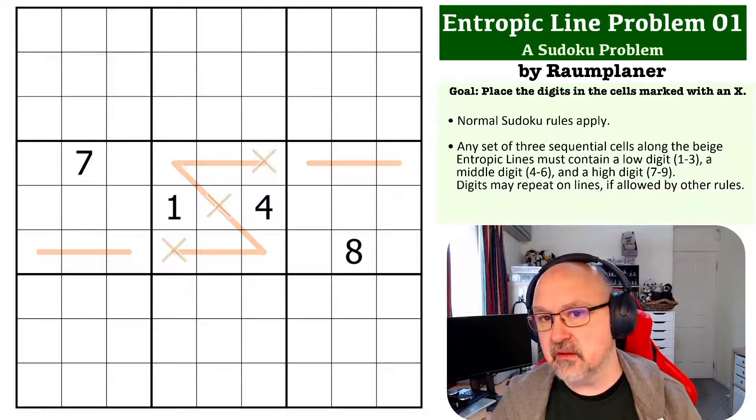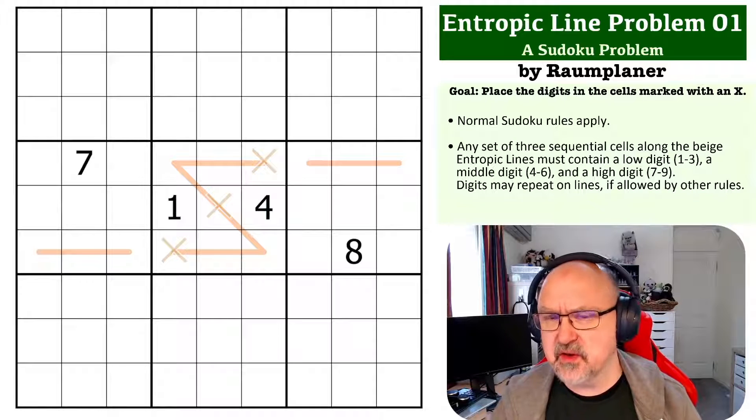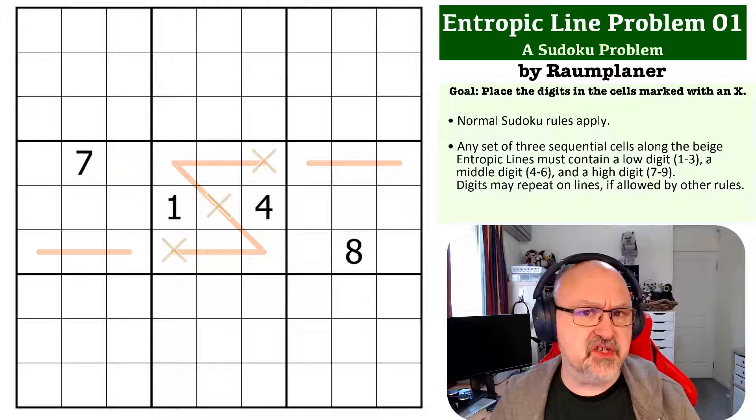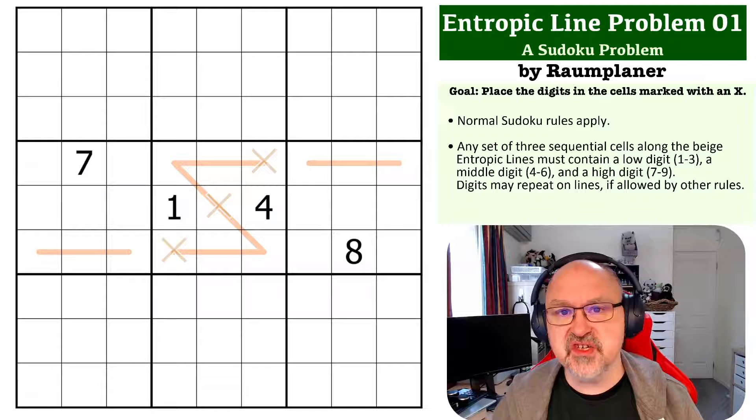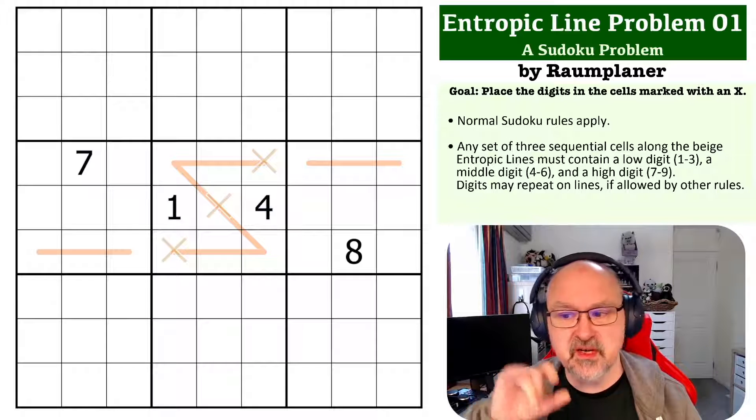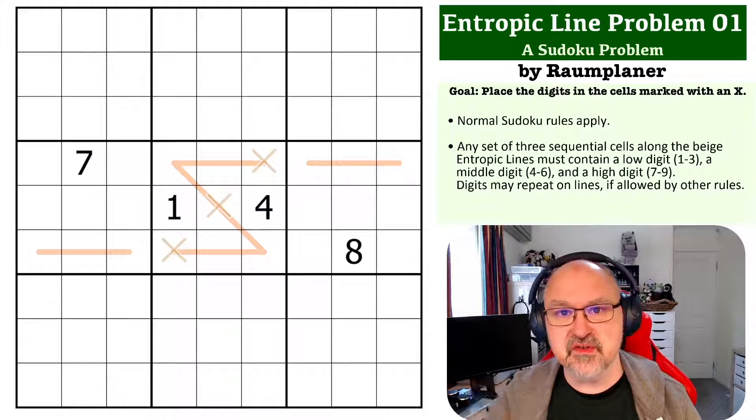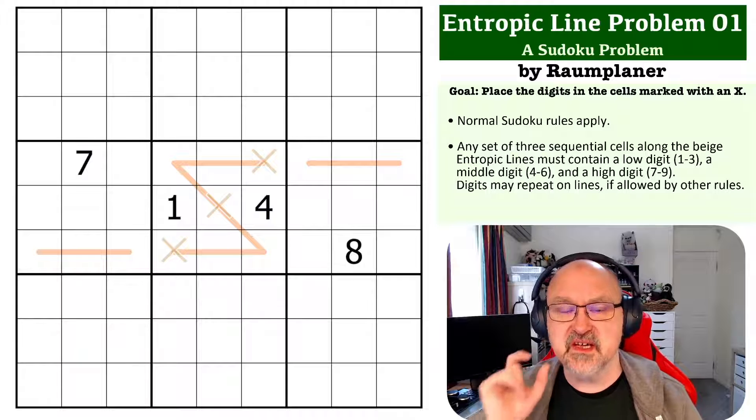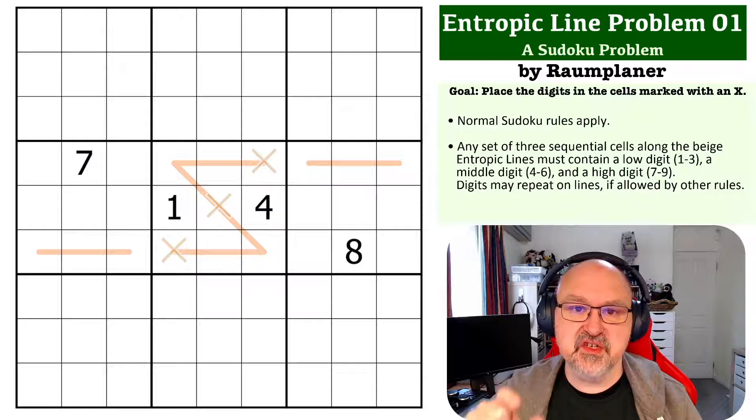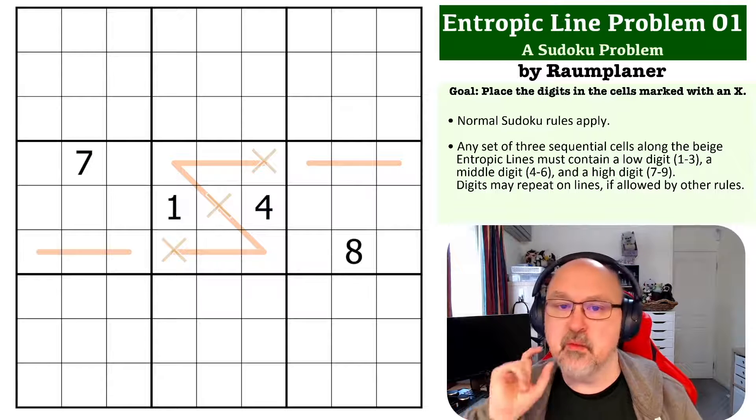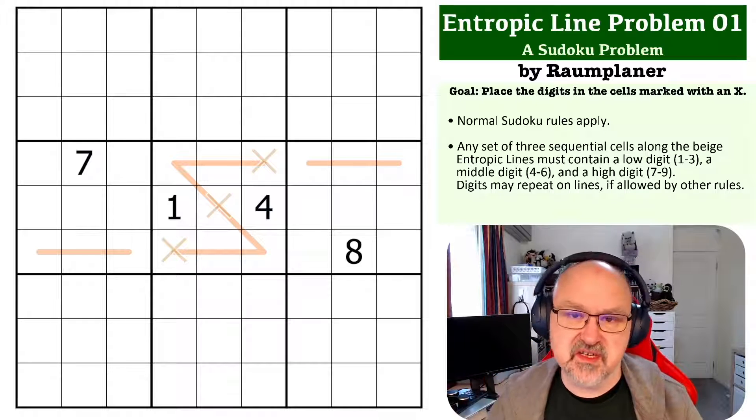So the way entropic lines work is a little bit different to a lot of other constraints. If you've watched my main channel, you would have seen this a few times possibly. And along entropic lines, each set of three sequential cells along a line must contain one low digit (1-3), one middle digit (4-6), and one high digit (7-9).